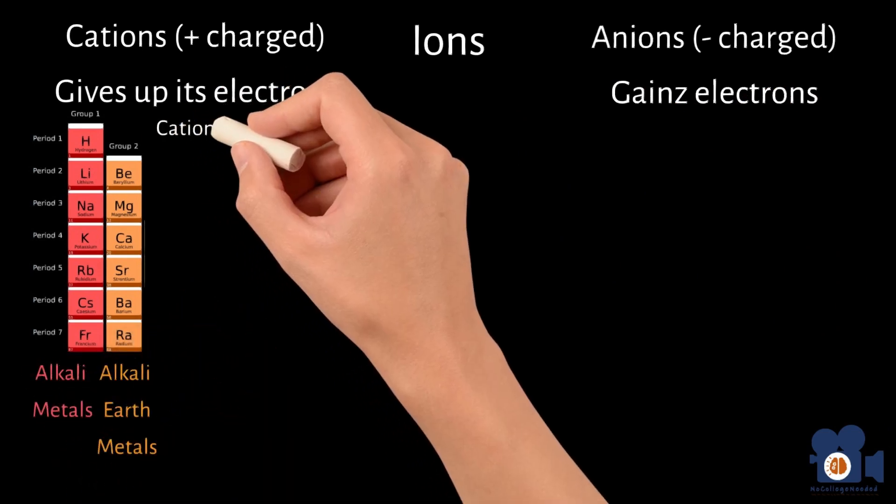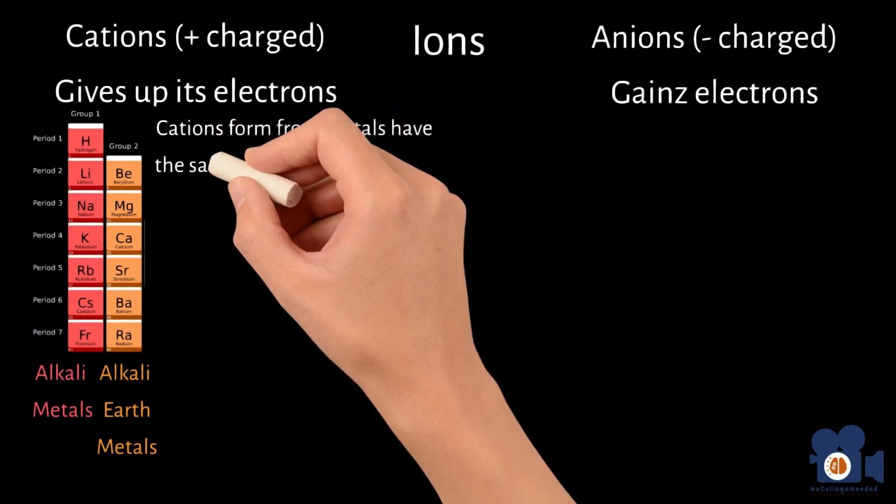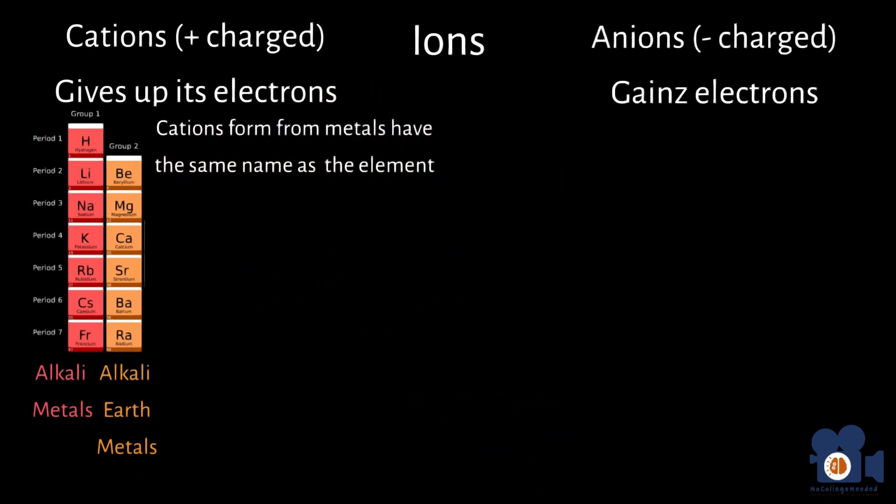These cations formed from metals have the same name as the metal, such as the lithium ion or the calcium ion. Some metals can form multiple types of ions with different charges, and in this case, they are still called by the name of the metal, but we add roman numerals to indicate the positive charge. Examples of this are cobalt two ion for Co2+, and cobalt three ion for Co3+.